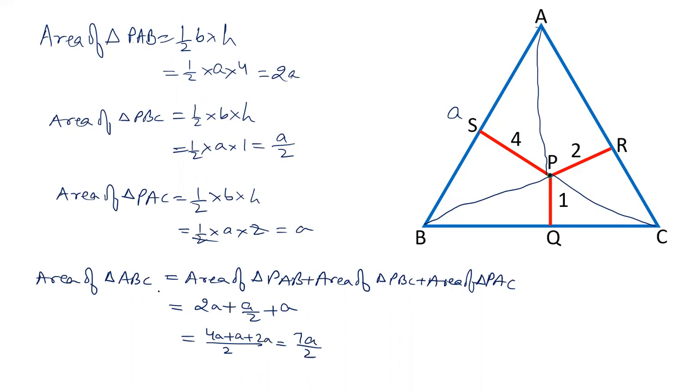Now, area of triangle ABC is also equal to A square root 3 by 4. That means A squared root 3 by 4 is equal to 7A by 2.